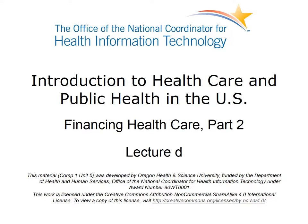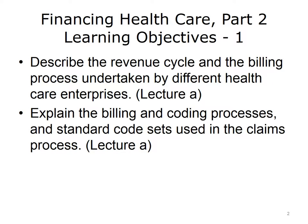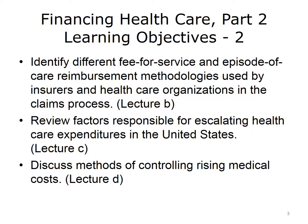Introduction to Healthcare and Public Health in the U.S. is a survey of how healthcare and public health are organized and how services are delivered in the U.S. It covers public policy, relevant organizations and their interrelationships, professional roles, legal and regulatory issues, and payment systems. It also addresses health reform initiatives in the U.S. The learning objectives for Financing Healthcare, Part 2, are to describe the revenue cycle and the billing process undertaken by different healthcare enterprises, explain the billing and coding processes and standard code sets used in the claims process, identify different fee-for-service and episode-of-care reimbursement methodologies, and review factors responsible for escalating healthcare expenditures and discuss methods of controlling rising medical costs.